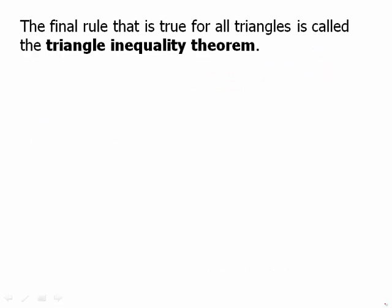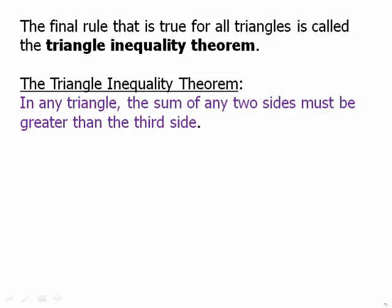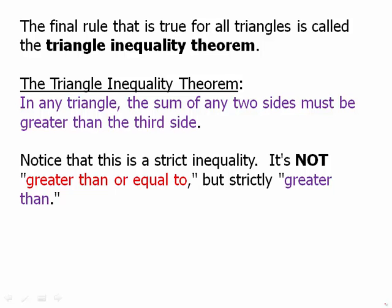The final rule that is true for all triangles is called the triangle inequality theorem. The triangle inequality theorem states, in any triangle, the sum of any two sides must be greater than the third side. Notice this is a strict inequality. It's not greater than or equal to, but strictly greater than.